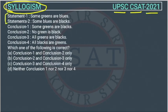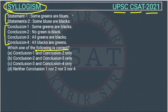Two statements are given and then four conclusions are given. We have to check which conclusion we can draw from these statements. We will draw the Venn diagram and solve it through the Venn diagram.